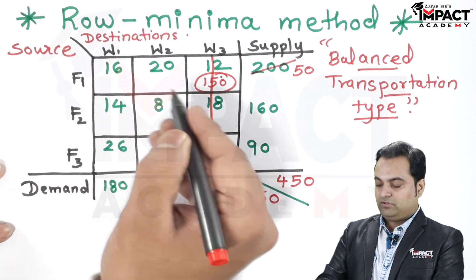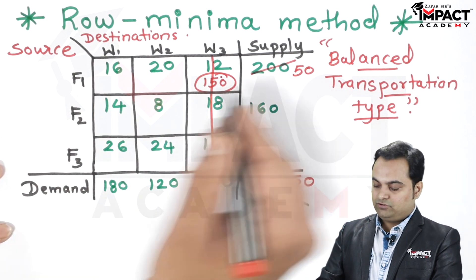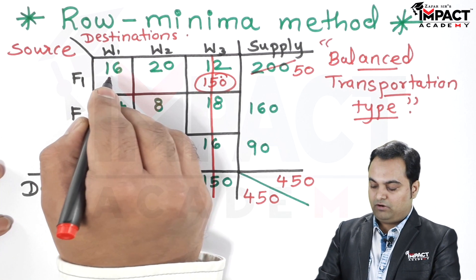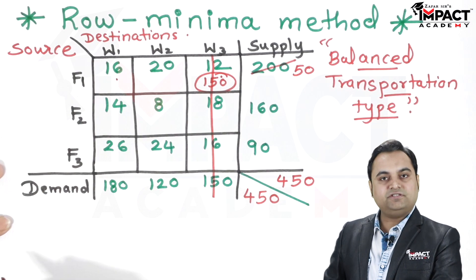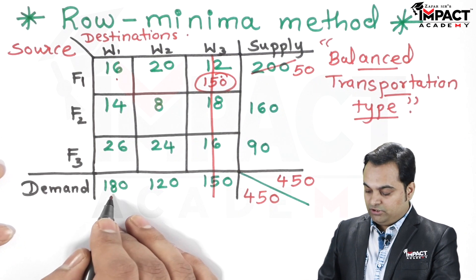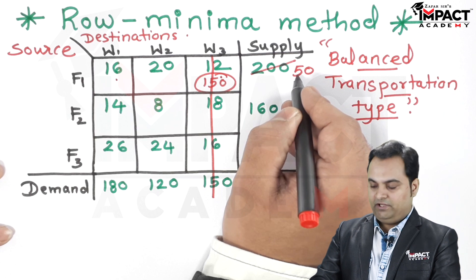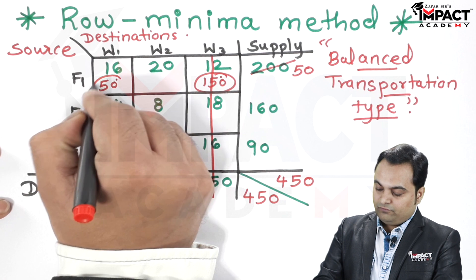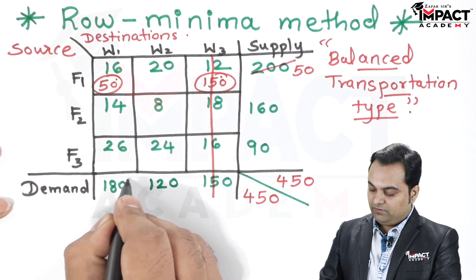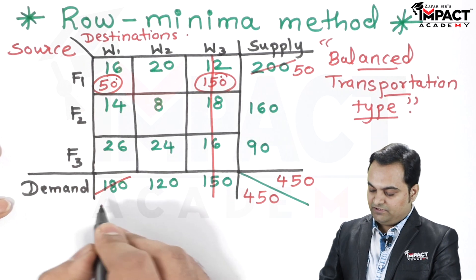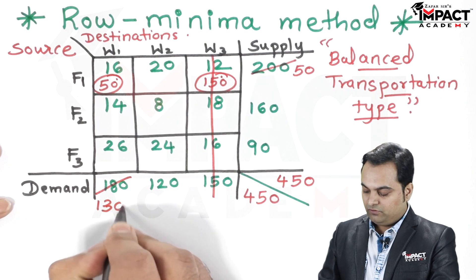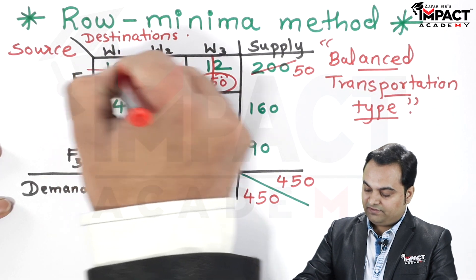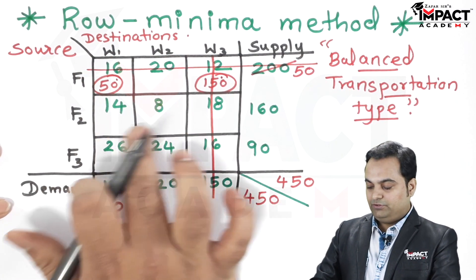Since the row is not yet cancelled, we look into the first row again and select the least value. Out of the remaining two values, 16 is the minimum. The demand is 180 but the supply is only 50, so the supply is completed — 50 is allocated here. The remaining demand is 130, and since supply is exhausted, we cancel this entire row and move to the second row.